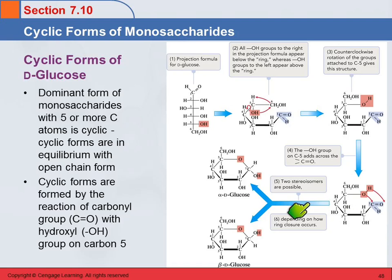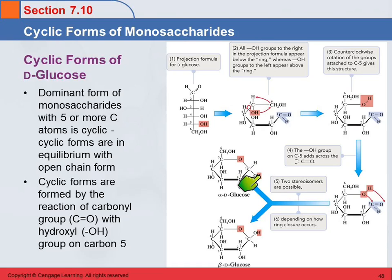The hydrogen goes over to the oxygen, and so we get this intramolecular reaction. From that, we get two possible stereoisomers. This carbon is not chiral — it has a double bond with the oxygen — but when it undergoes this reaction, it becomes chiral. This hydroxyl group that's formed can either be below the ring or above the ring, depending on how the ring closes. The ring forms, then opens up and forms again, going back and forth, giving you a mixture of these two isomers.